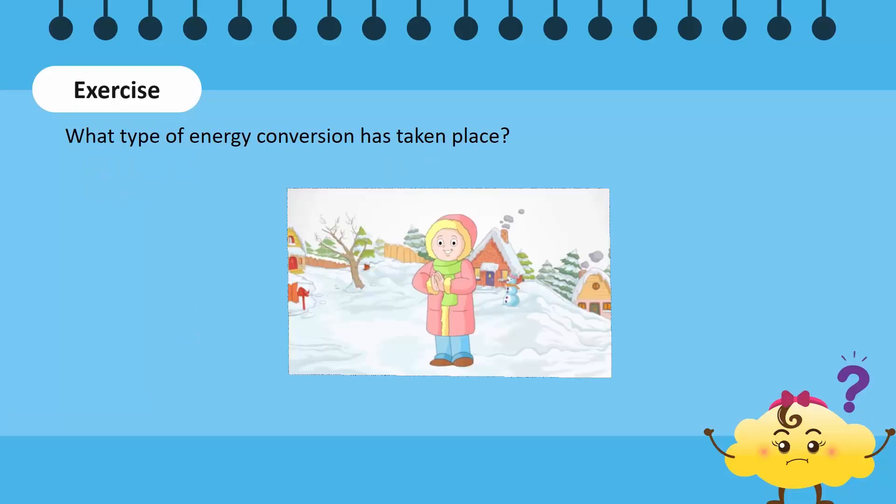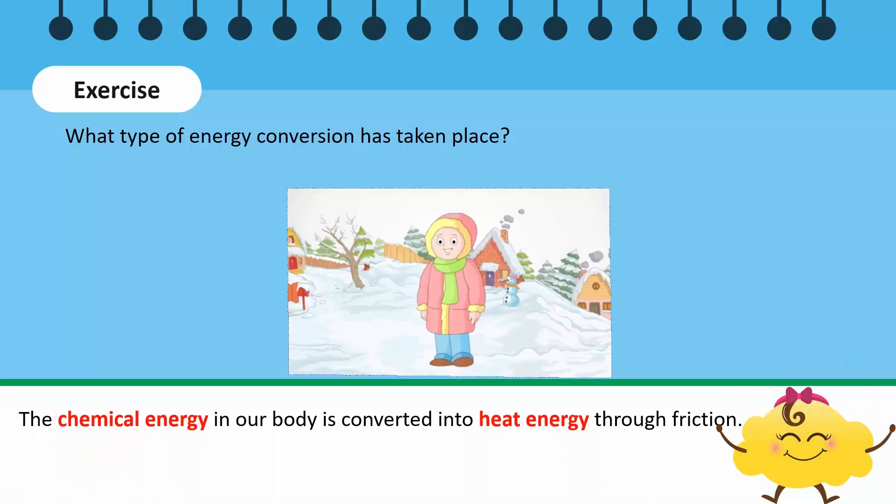Our hands warm up when we rub our palms together. What type of energy conversion has taken place? The chemical energy in our body is converted into heat energy through friction.